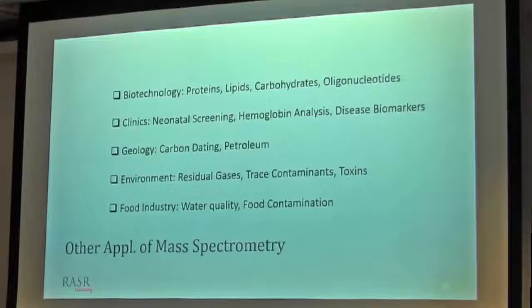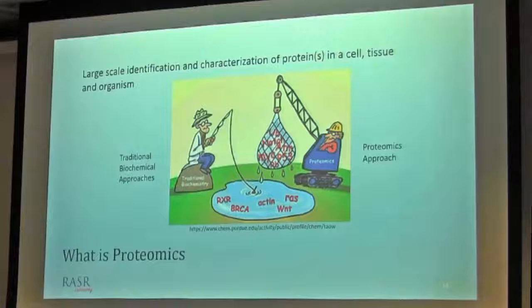In general, not all but a few, even in the food industry for food quality, water quality, contamination, toxins as well as remaining traces of gases. People are using it in petroleum industries. Mass spec is already developed in clinics, most likely for biomarker development of signatures and all kinds of basic building blocks of life from lipids to carbohydrates and oligonucleotides in biotechnology.